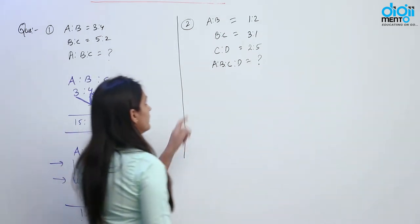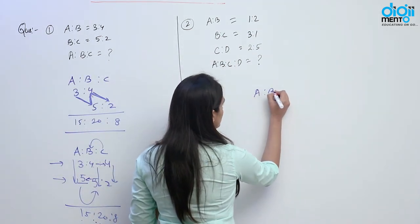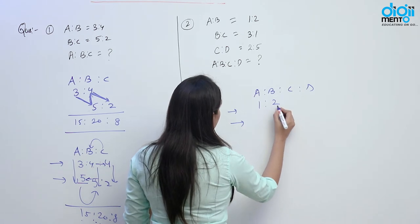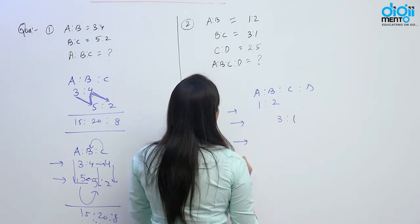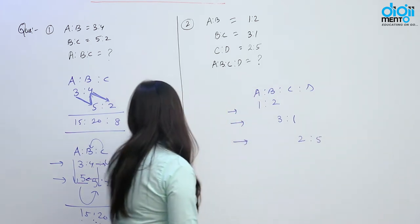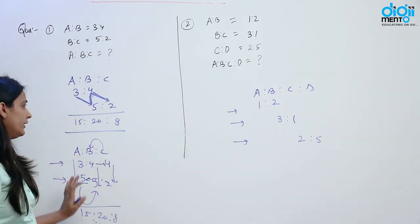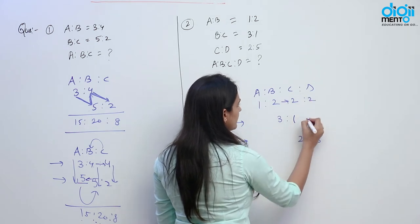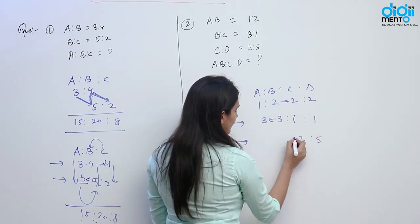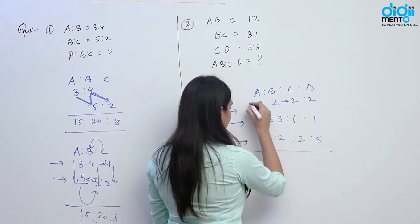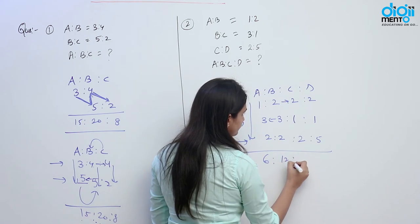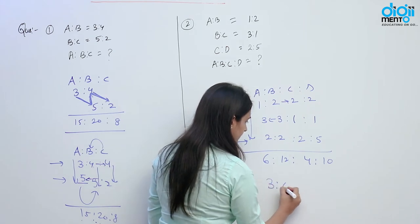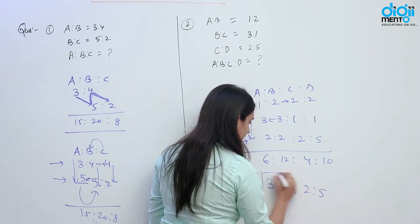One more question of this type. We have A ratio B, ratio C, ratio D. In the first row write A ratio B that is 1 ratio 2. In the second row write B ratio C that is 3 ratio 1. In the third row write C ratio D that is 2 ratio 5. Similarly fill in the blank spaces for C, D, and A using the digits from the sides, then multiply vertically. We get the ratio of A, B, C, D as 3 ratio 6 ratio 2 ratio 5.